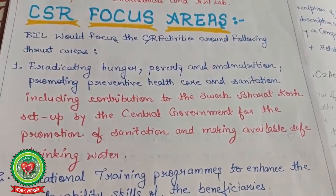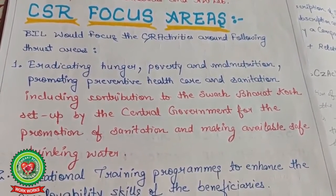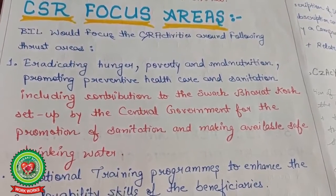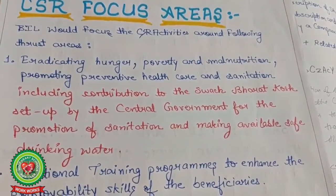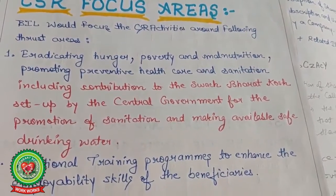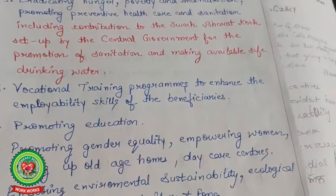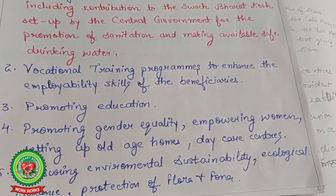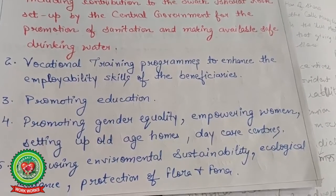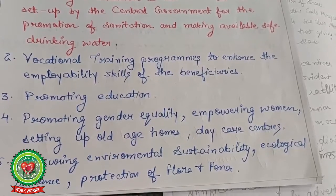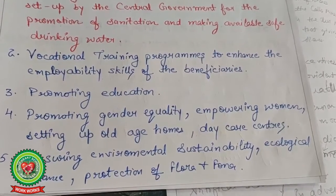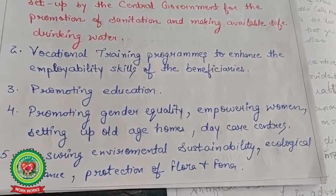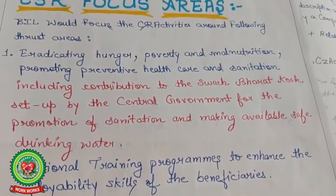Bata's CSR focus areas: number one, eradicating hunger, poverty, and malnutrition, promoting preventive health care and sanitation including contribution to the Swachh Bharat Kosh set up by the central government, and making available safe drinking water. Second, vocational programs to enhance employability skills. Third, promoting education, gender equality, and empowering women. Fourth, setting up old age homes and daycare centers. Fifth, ensuring environmental sustainability, ecological balance, and protection of flora and fauna.